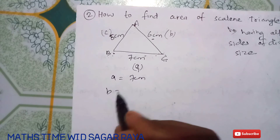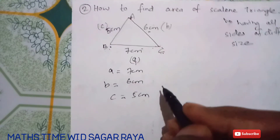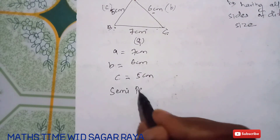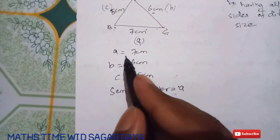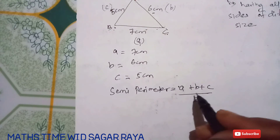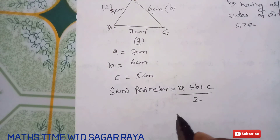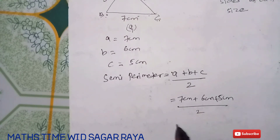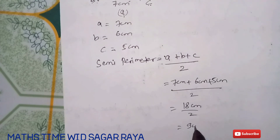So a = 7 cm, b = 6 cm, and c = 5 cm. To find the area of a scalene triangle, first find the semi-perimeter. Semi-perimeter means half of the perimeter, which is the sum of all sides divided by 2: s = (a + b + c) / 2 = (7 + 6 + 5) / 2 = 18 / 2 = 9 cm.